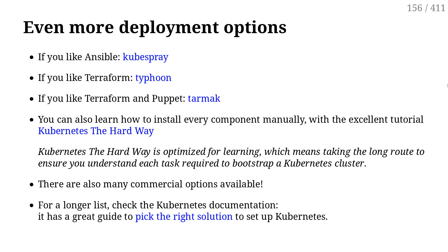You also have lots of commercial options — commercial distributions of Kubernetes. There is Tectonic by CoreOS, now Red Hat. There is Docker Enterprise Edition, which also supports Kubernetes. There are a bunch of others. So depending on where you want to deploy and what your requirements are, you will want to pick a different option.